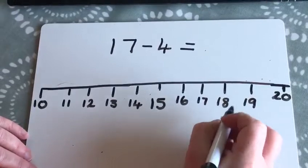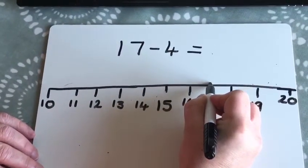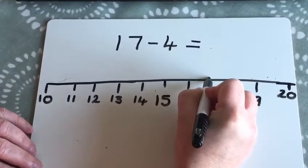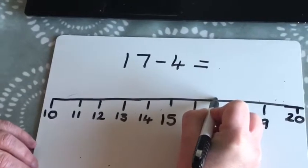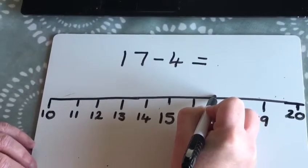So the most important thing is that you put your finger or your pen on number 17, which is where we're starting. But we do not count 17, we count as we move backwards. So we're at 17 and we're going to count backwards 4 numbers.